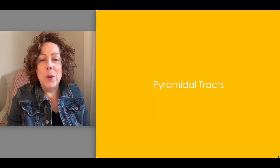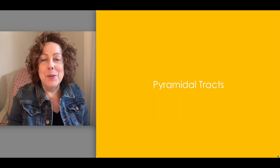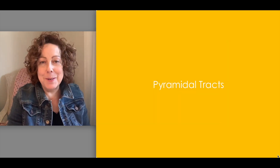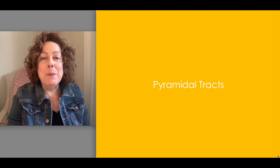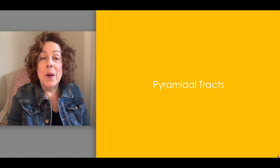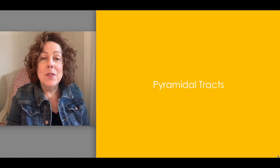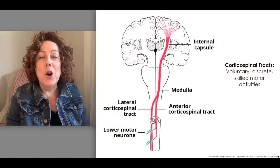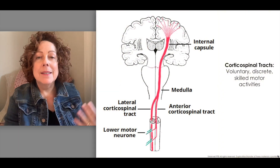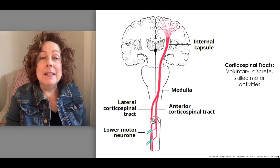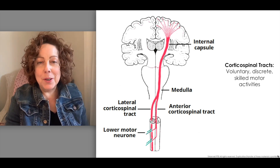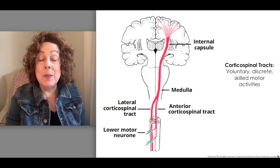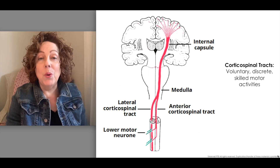In order to talk about neurology and the muscles, we need to remember the spinal tracts. In particular, we want to remember the pyramidal tract and the corticospinal tracts, which flow from the motor cortex to the muscles. The lateral and the anterior corticospinal tracts are the ones we are primarily concerned with because they control voluntary discrete movements.